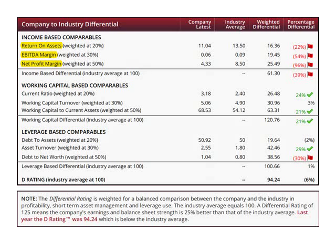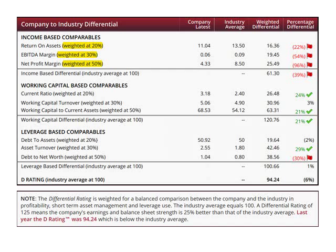The score for the income-based comparables is comprised of the return on assets, EBITDA margin, and net profit margin. As some ratios are more important than others, they are weighted differently. In this case, the net profit margin is the most important of the income-based ratios.